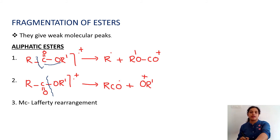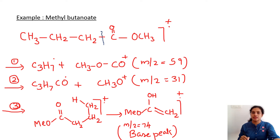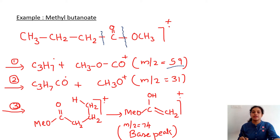The third pattern is McLafferty rearrangement. Taking methyl butanoate as the example, two types of alpha cleavage are shown. The first, where C3H7 dot is expelled, gives CH3OCO+ at m/z = 59. The second involves elimination of the RCO dot group, giving CH3O+ at m/z = 31.